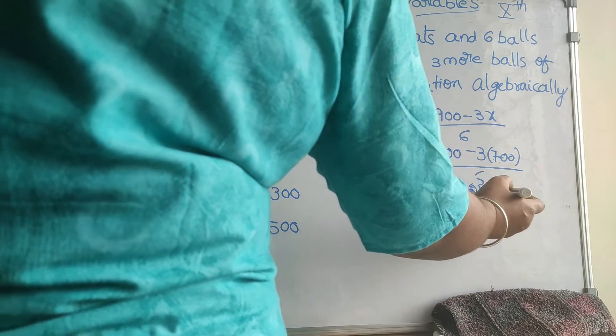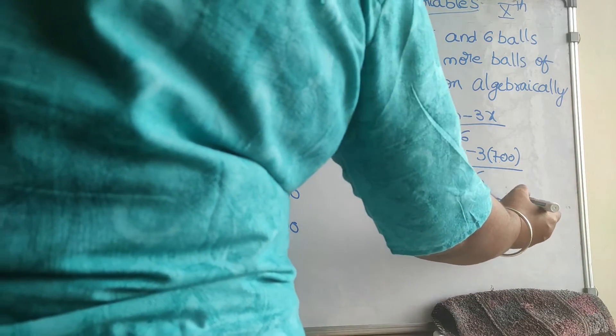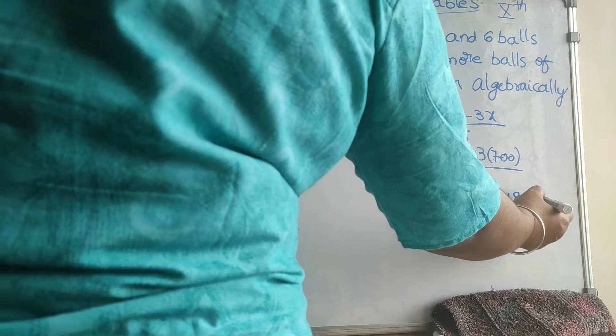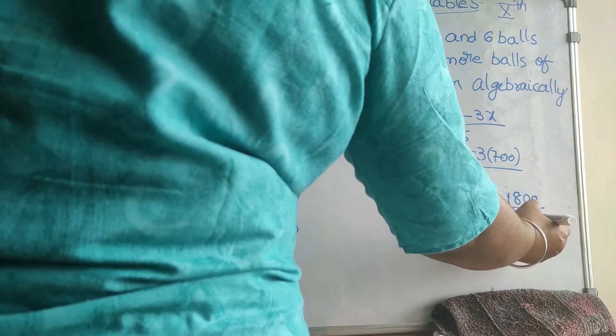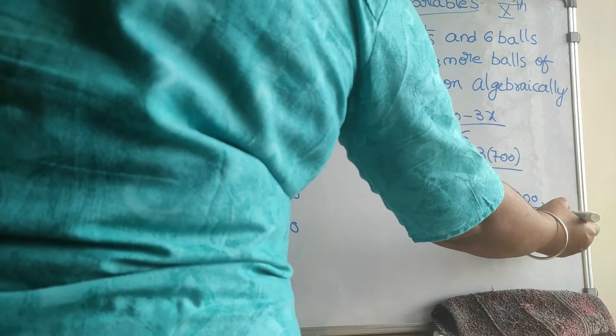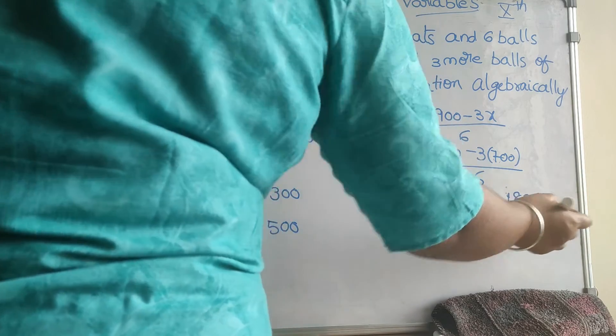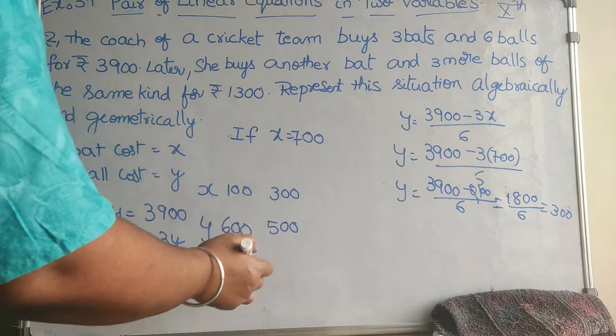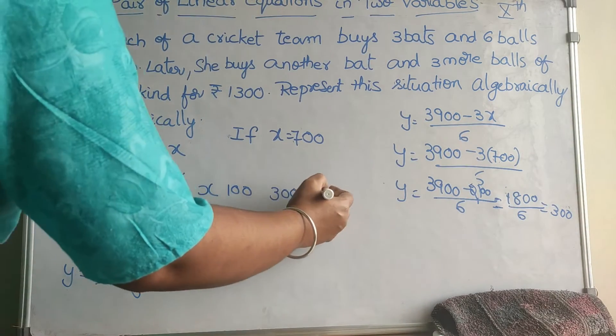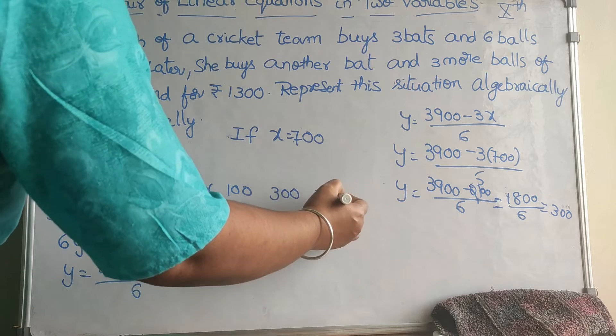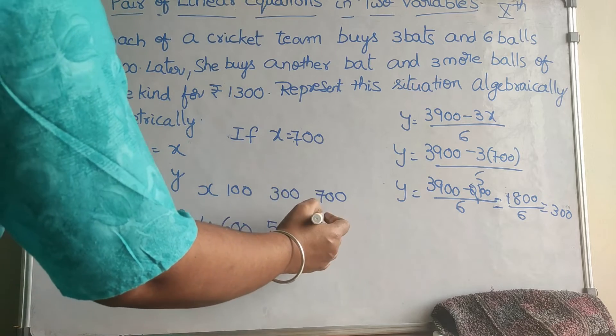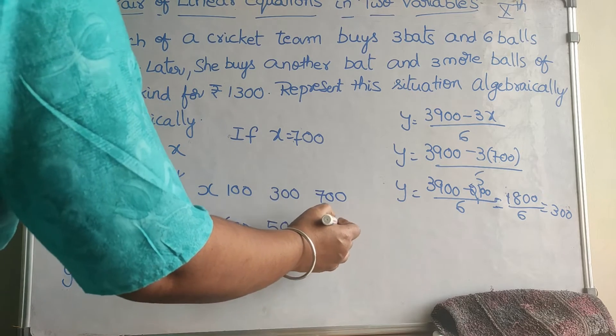If x = 700, then y = (3900 − 2100) / 6 = 1800 / 6 = 300. So when x is 700, y is 300. This gives us our table of values for the first equation.